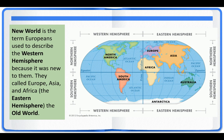Before we get started, let's review what we mean by the New World. The New World is the term Europeans used to describe the Western Hemisphere because it was new to them — they had just discovered it. It was a new piece of territory, a new part of the world that they had never explored or even known about. They called Europe, Asia, and Africa the Eastern Hemisphere, or the Old World. This area had already been discovered and was where many people had already been living and past civilizations had already been started.